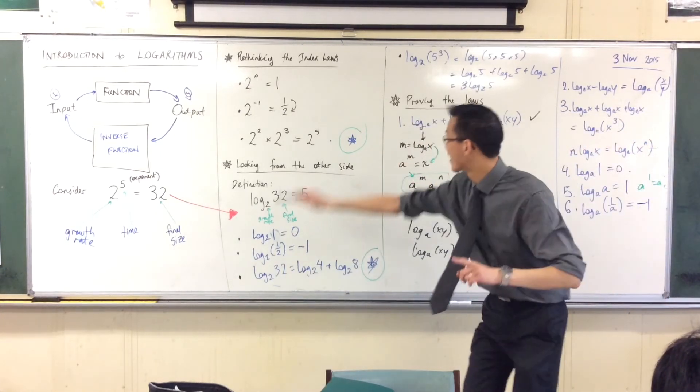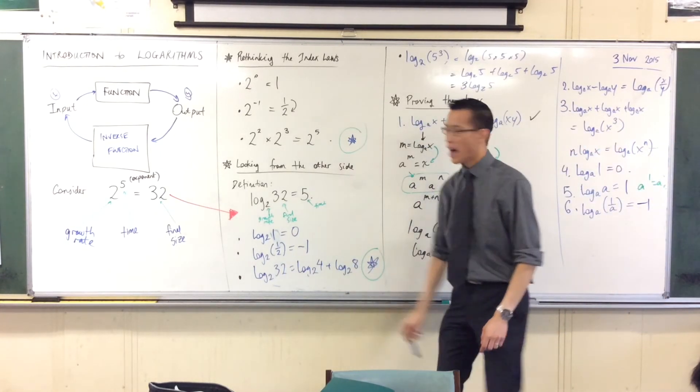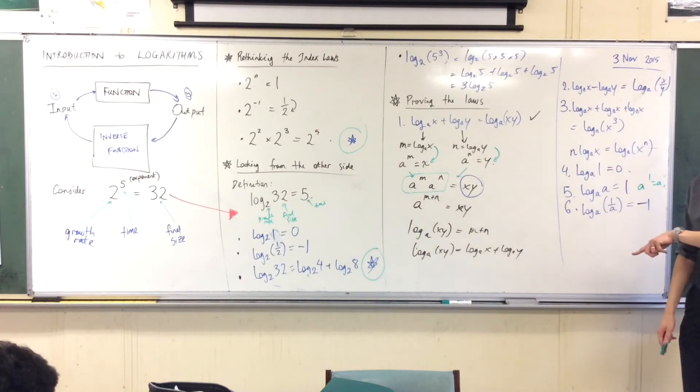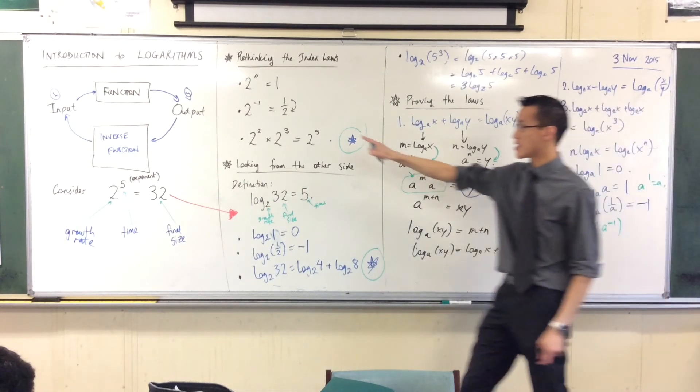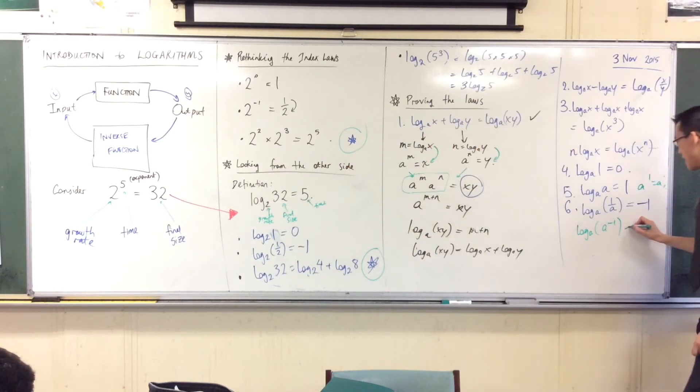I can restate it another way. I can rewrite using index laws, right? I can rewrite one over a in index form. How do I do that? It's a to the power of negative one, right? That's like this but with a instead of two, okay. So that's equal to, well, that minus one...